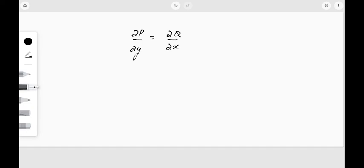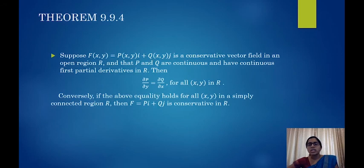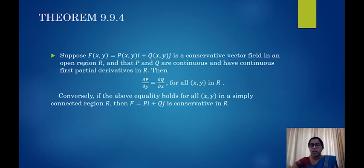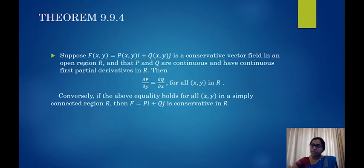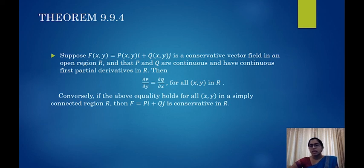So if the field is conservative, we can easily see that ∂P/∂y = ∂Q/∂x. The converse part we are not going to prove, but it is also true: if ∂P/∂y = ∂Q/∂x for every (x, y) in R, then the vector field F will be conservative in R. With this we come to an end of all the theorems of this section and shall move on to problems in the next lecture. Thank you, stay home and stay safe.